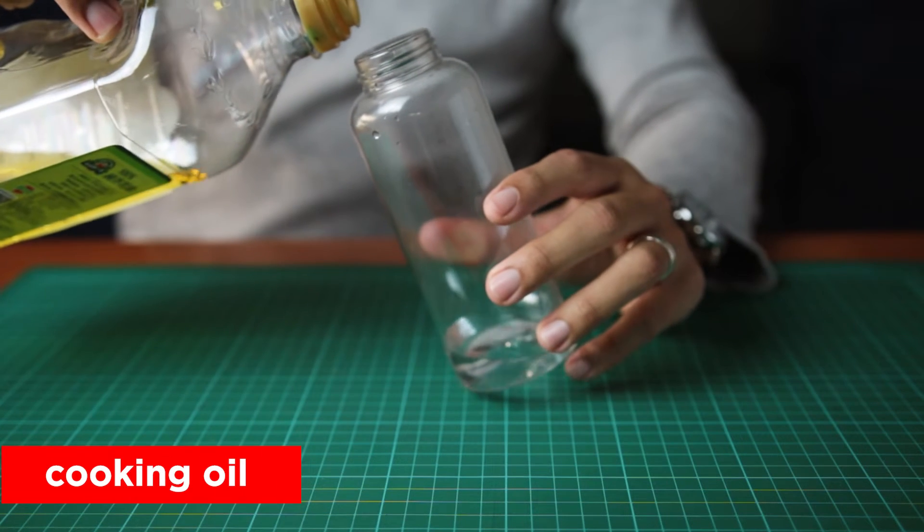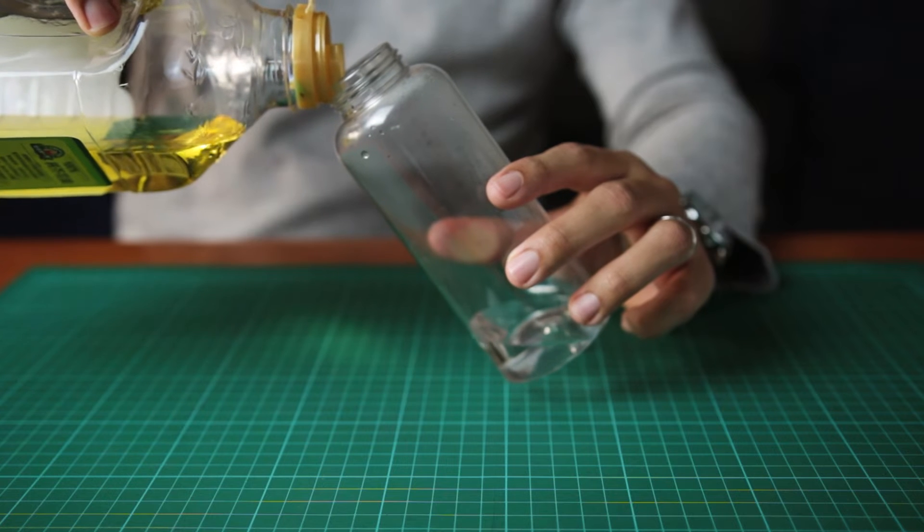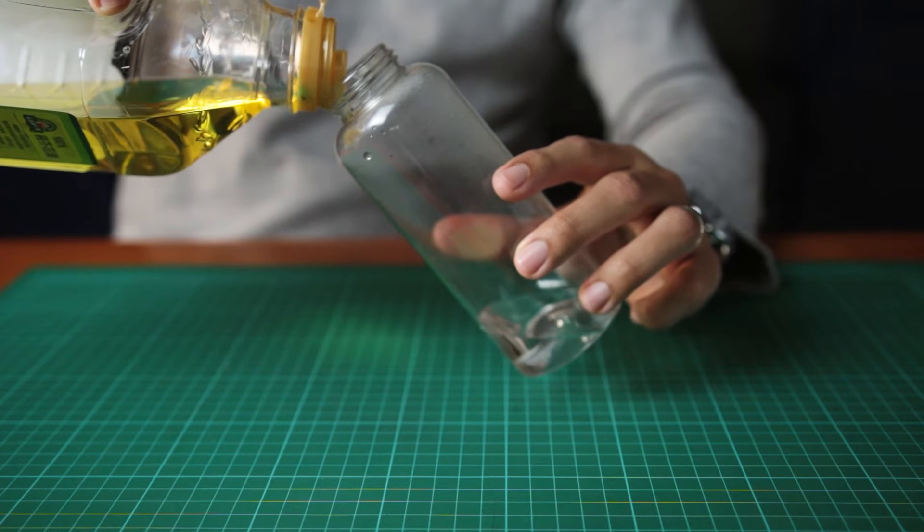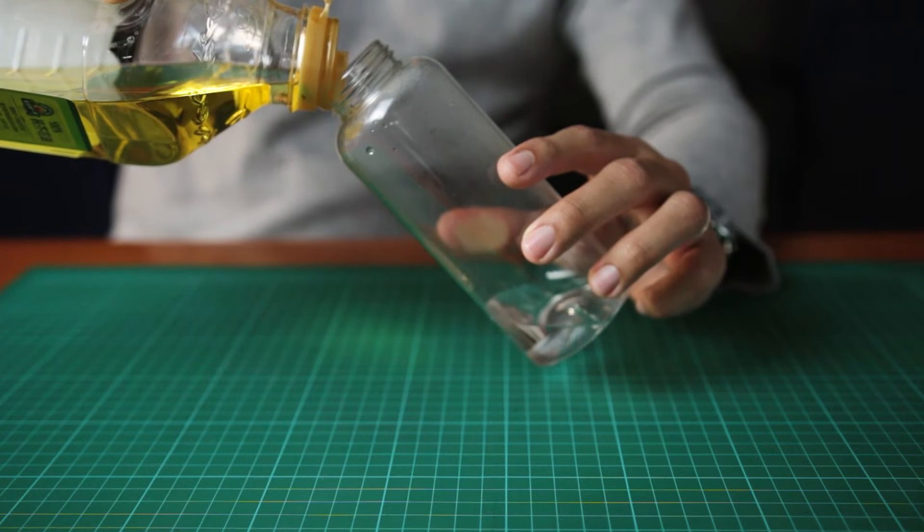After that, you will slowly add cooking oil. The slower you pour the oil, the better. If you pour too fast, you will create bubbles, which will affect your end results.